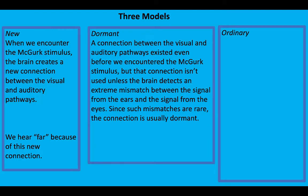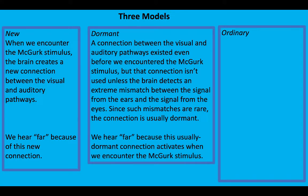But such mismatches are rare, so this connection is usually dormant. You hear far in the case of the bar-far McGurk effect because this usually dormant connection becomes active because the mismatch is extreme.